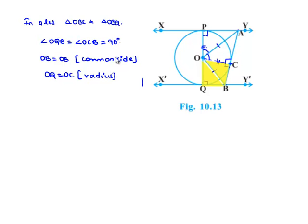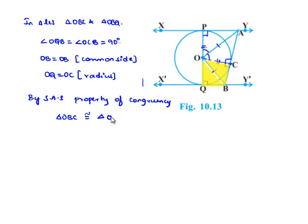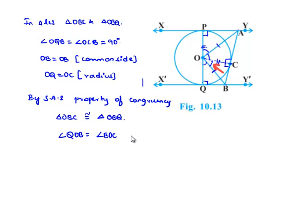By SAS property of congruency, triangle OBC is congruent to triangle OBQ. When two triangles are congruent, their corresponding angles are equal. Therefore, angle QOB equals angle BOC. Let this be equation number 2.